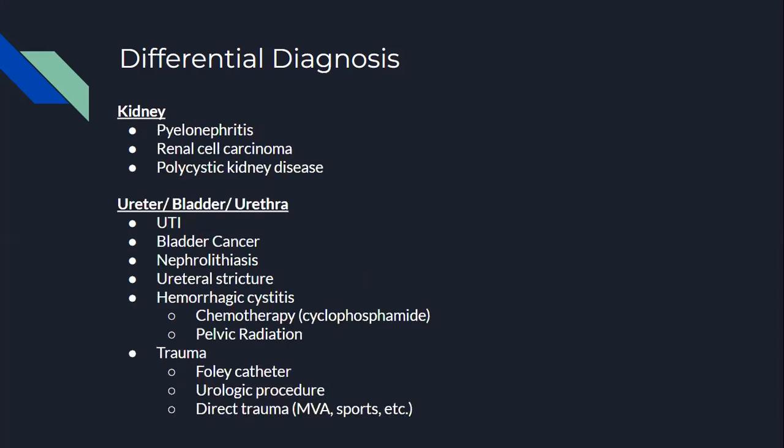At the level of the kidney, we have pyelonephritis — watch out for pregnant patients, as progesterone can dilate the ureters causing backflow of bacteria into the kidney, or any patients with a history of recurring UTIs, or even patients with diabetes mellitus. For renal cell carcinoma, look out for patients with risk factors such as smoking, drinking, or familial history. For PKD, look out for patients with familial history of kidney masses and hypertension.